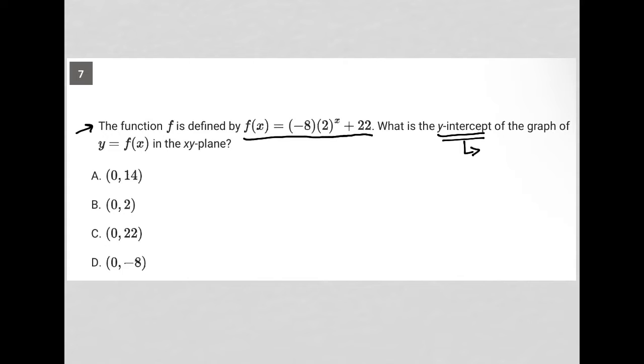The y-intercept is always found by replacing x with 0, right? It's basically the y value when x equals 0. So I'm going to go here and say my y-intercept is basically the same as whatever f of 0 is.